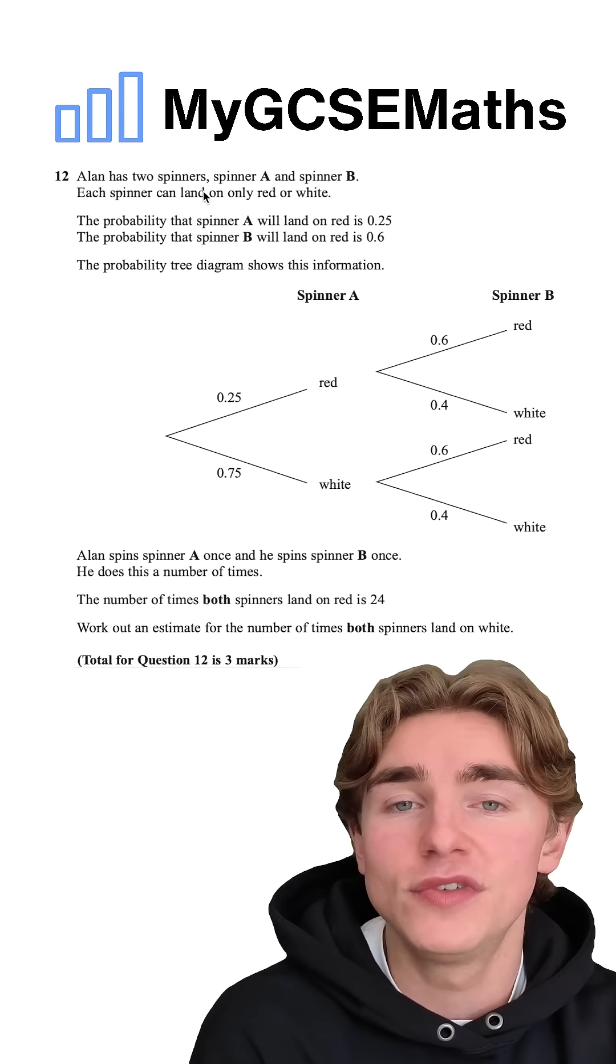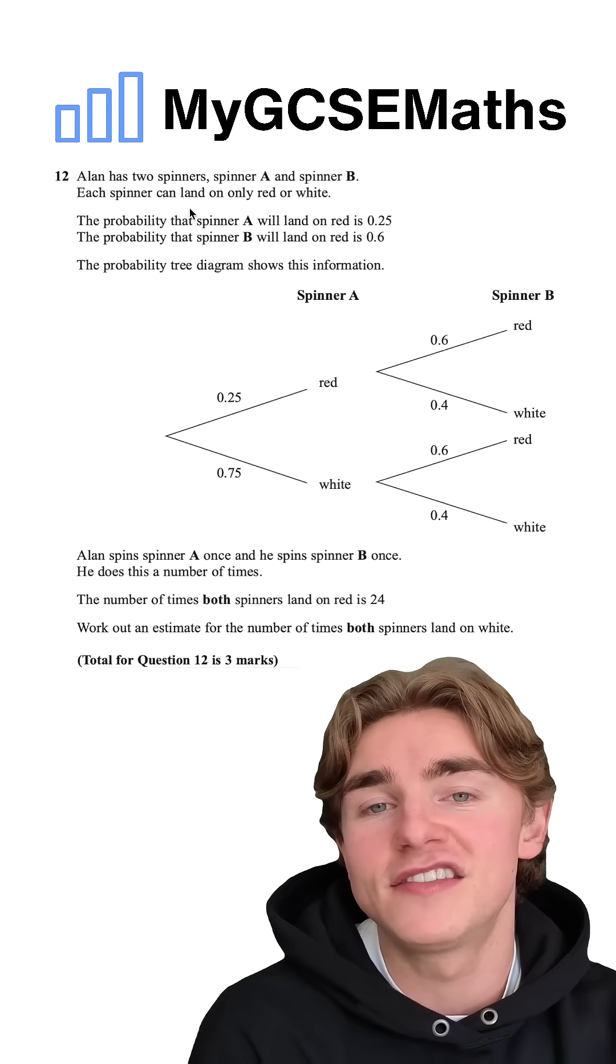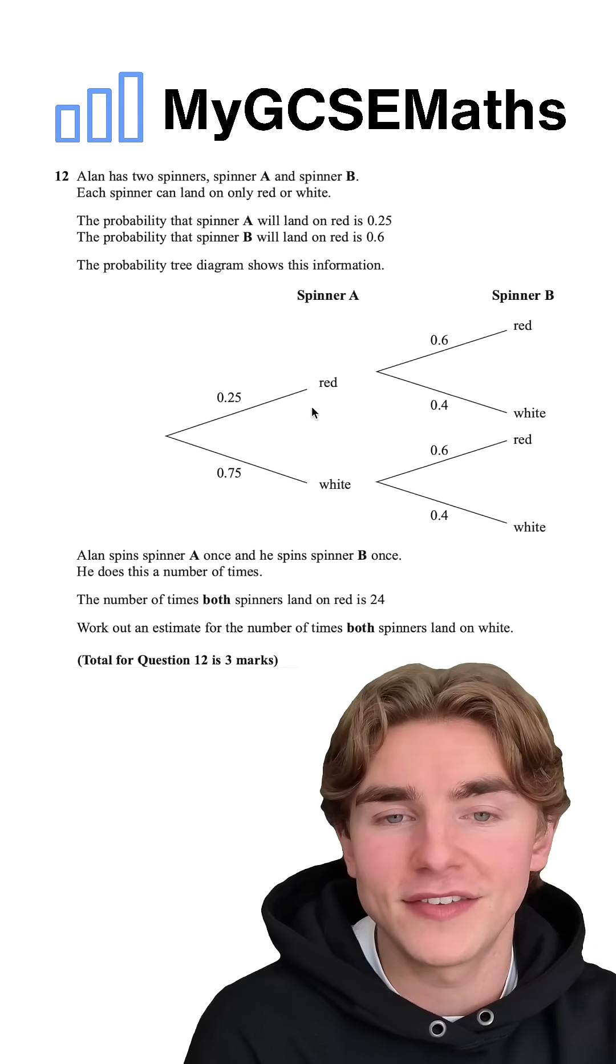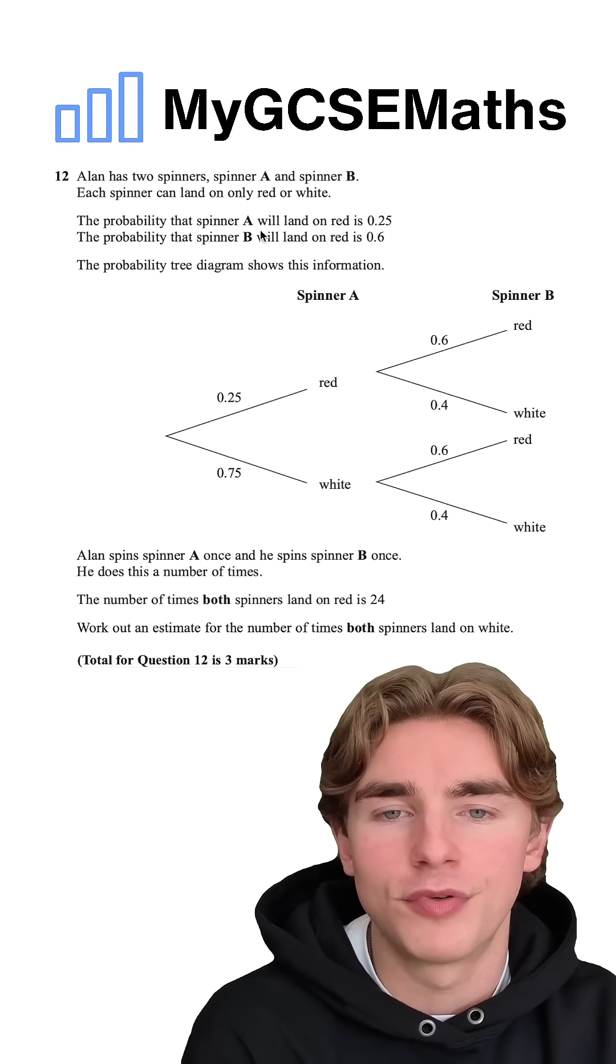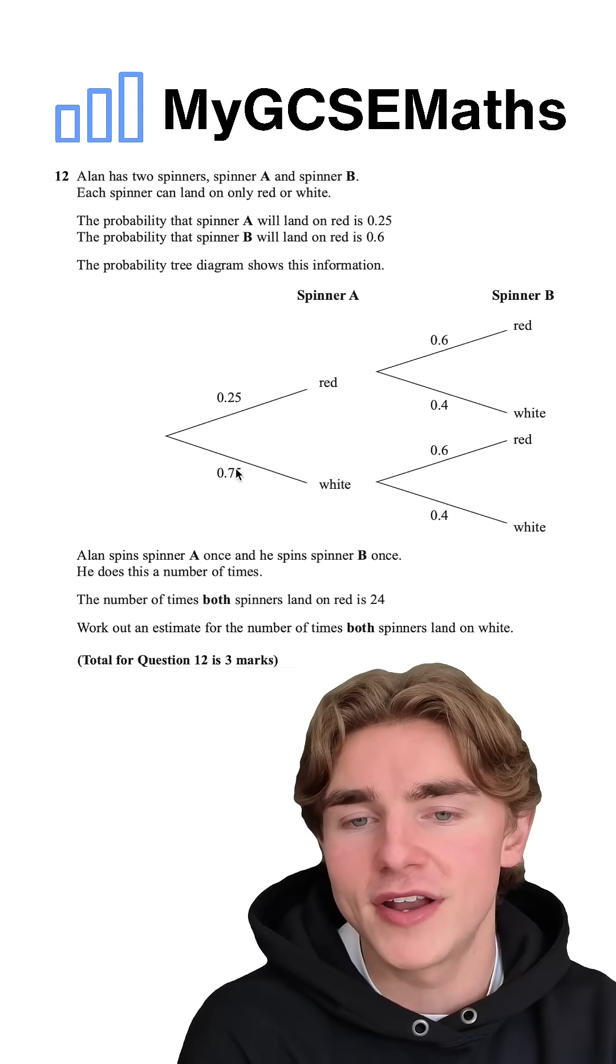The question says that Alan has two spinners, spinner A and spinner B. Each spinner can land on only red or white. We're then given our probabilities, which are also on our tree diagram.